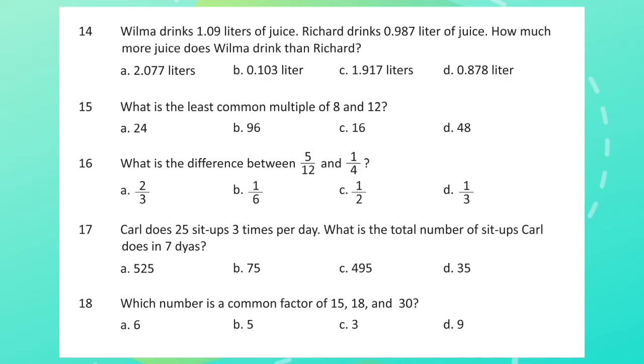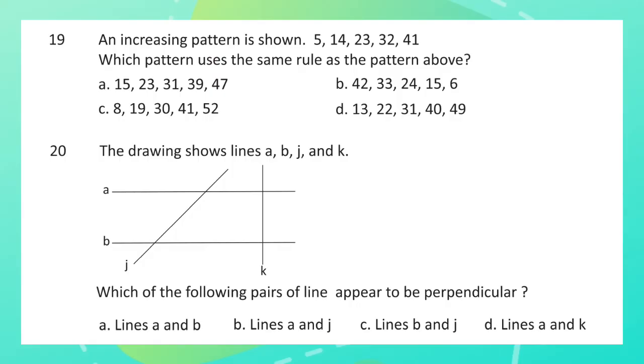Question 18: Which number is a common factor of 15, 18, and 30? Question 19: An increasing pattern is shown: 5, 14, 23, 32, 41. Which pattern uses the same rule as the pattern above?